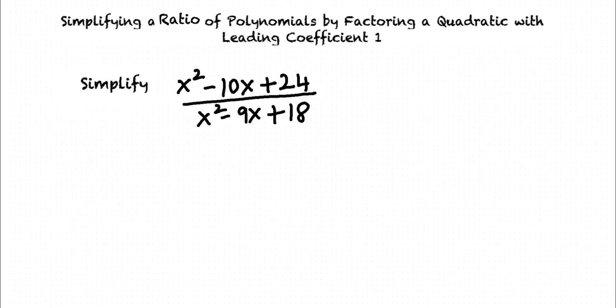Let's take another example. We are required to simplify the expression x² minus 10x plus 24 over x² minus 9x plus 18. In this expression, both the numerator and denominator are quadratic expressions. What should we do in this case?